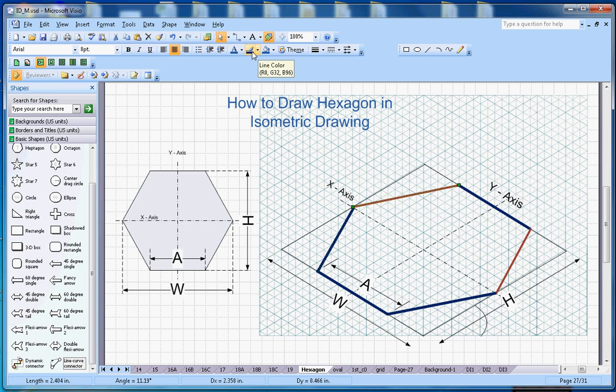It's pretty much easy to just connect these two lines here. And that's how you draw the hexagon in isometric drawing.